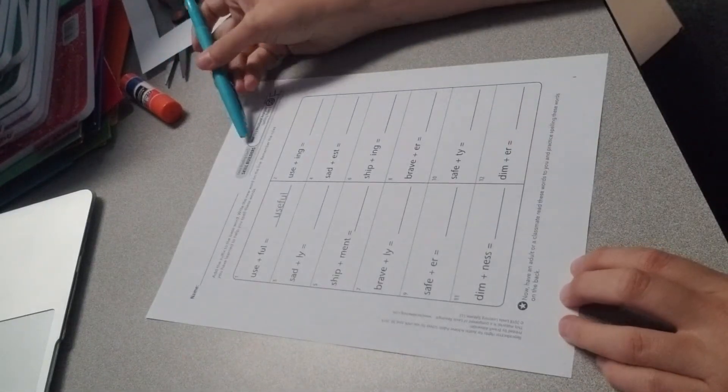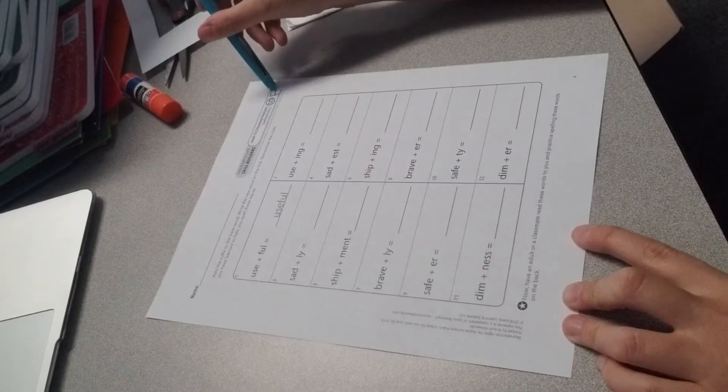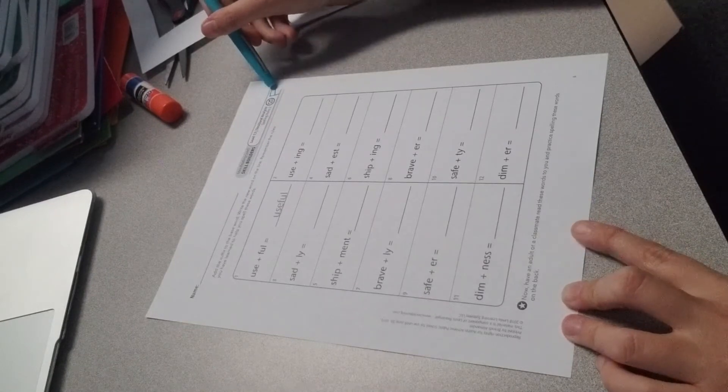Okay scholars, this is level 13 structural analysis spelling rules 2. This is sheet F. Make sure you're on the correct page.